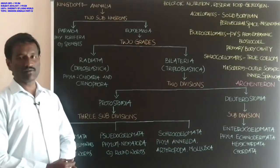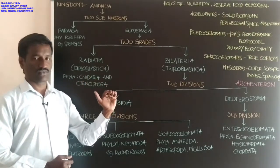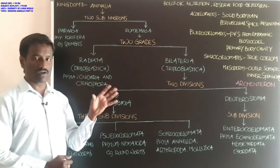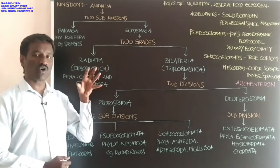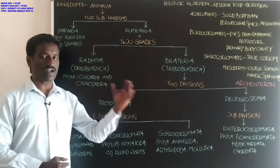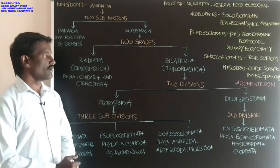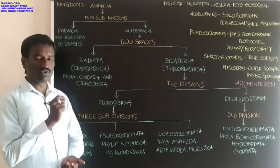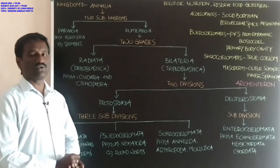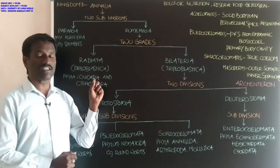Some animals are sedentary or attached to the substratum. Mostly these are living, motile animals — movement of the body from one place to another. Most animals show motility. Neurons, nervous cells, and sensory cells are well developed in these organisms. Neuromotor and sensory mechanisms are developed in these animals.